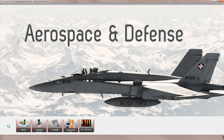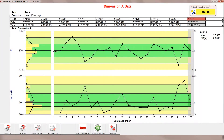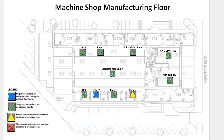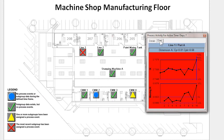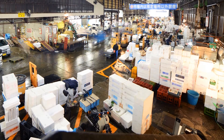Proficient is an established software application that delivers SPC and quality improvement capabilities to companies of all sizes and industries. Whether you use Proficient on one line, throughout one site, or across multiple sites, you get fast, easy access to insights that can literally change the way you do business.